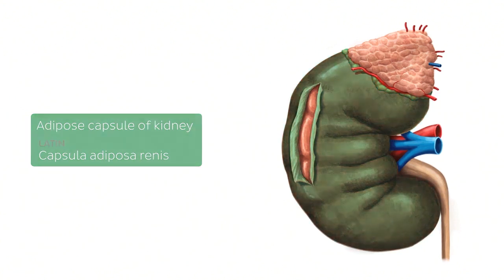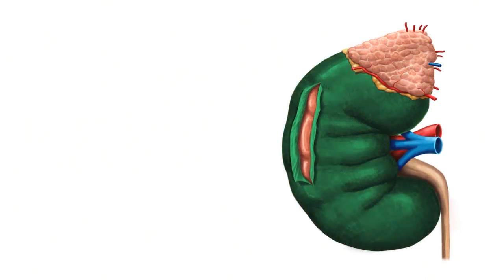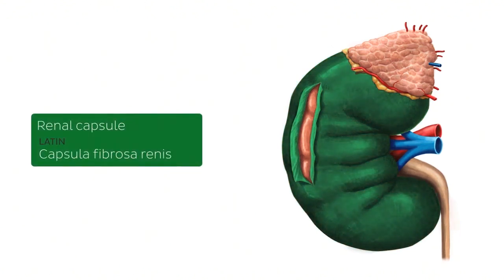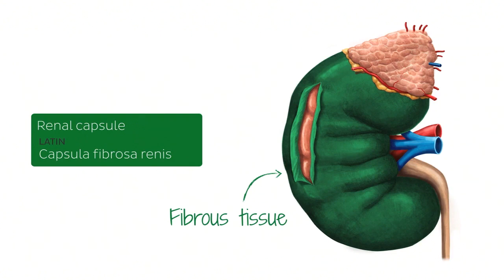The next structure now highlighted in green is known as the renal capsule. The renal capsule, or fibrous capsule of the kidney, is a tough layer of fibrous tissue that covers the kidneys, as clearly seen on this image. This tough capsule acts as a protective layer, preventing the kidneys from damage due to trauma.